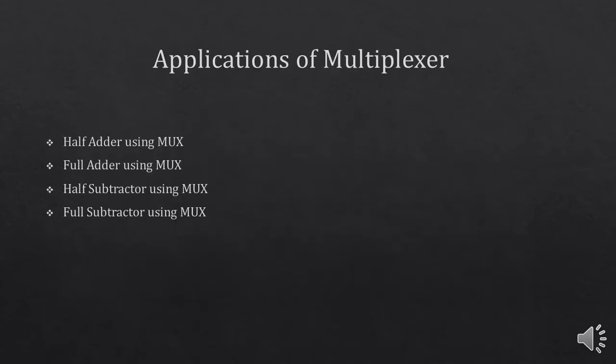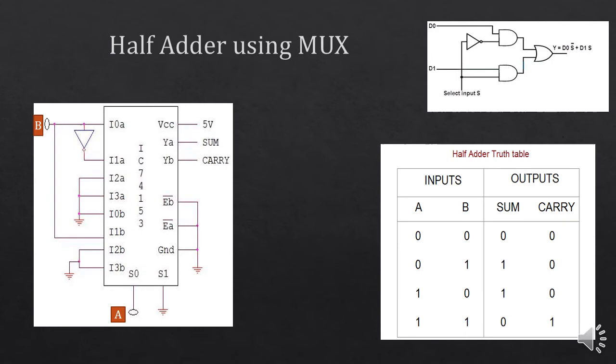Now let's implement some other circuits using multiplexer. In this part we are going to implement a half adder, full adder, half subtractor, and full subtractor using multiplexer ICs. You can implement the half adder using a 2x1 multiplexer, which has one data pin, one select pin, and one output pin.